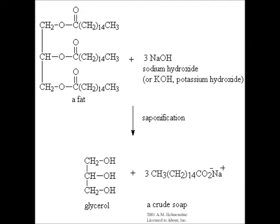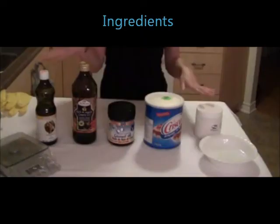Sodium hydroxide is used to make solid soap, and potassium hydroxide is used to make liquid soap. It forms glycerol and soap, which is the final product. These are the ingredients you can use: oil, shortening, sodium or potassium hydroxide, and vinegar.